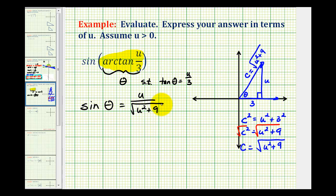So this is what this trig expression is equal to, but you may be asked to rationalize this, so let's go ahead and do that. If we have u divided by the square root of u squared plus nine,